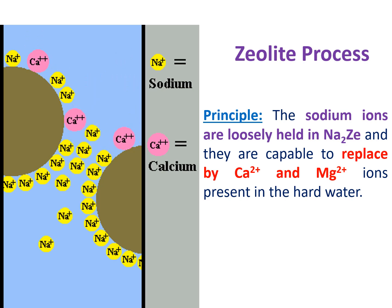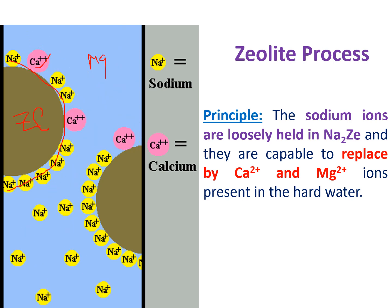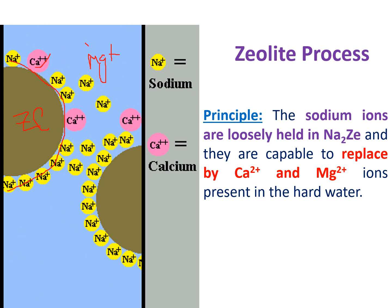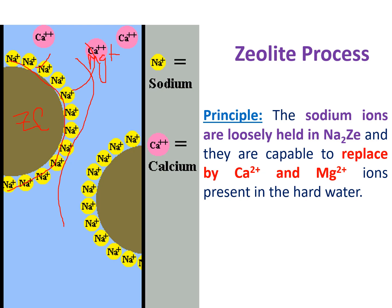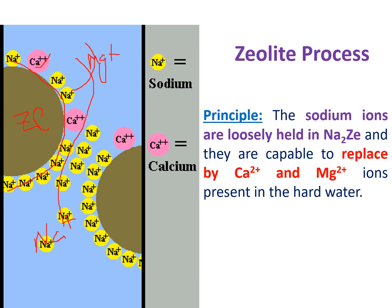Looking at the figure, this is the zeolite bed. The sodium zeolite has a large number of sodium ions on its surface, and these sodium ions are replaced by calcium or magnesium ions. Here, only calcium is shown, but if water contains Mg²⁺, those magnesium ions are also replaced by sodium ions. This means the Ca²⁺ and Mg²⁺ ions in hard water are replaced by Na⁺ ions — we can remove all calcium and magnesium ions by replacing them with sodium ions. This is the basic principle of the zeolite process.